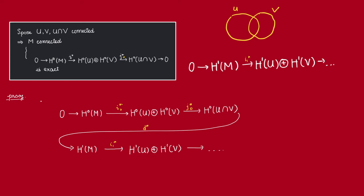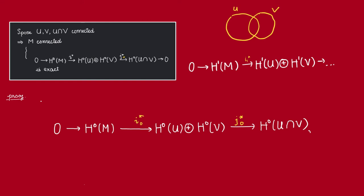So now let us show that this sequence is exact. In other words, let us show that this map J0 here is actually surjective. Now, because U and V are connected, we know that these H0 cohomology groups are just going to be isomorphic to R. So what is this map if we identify these cohomology groups with R?